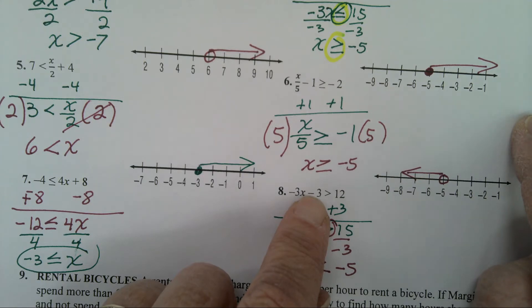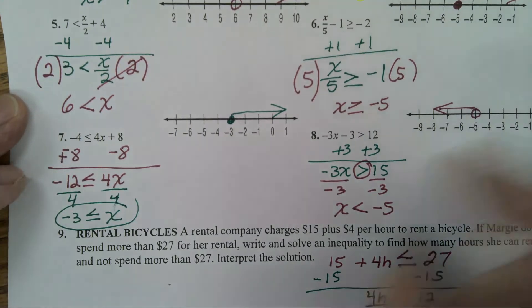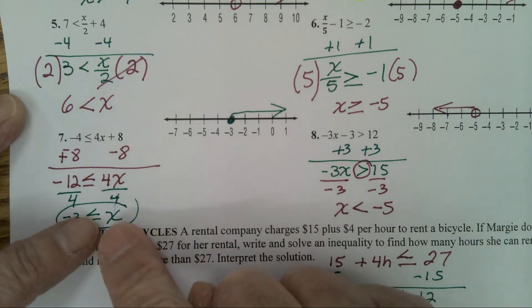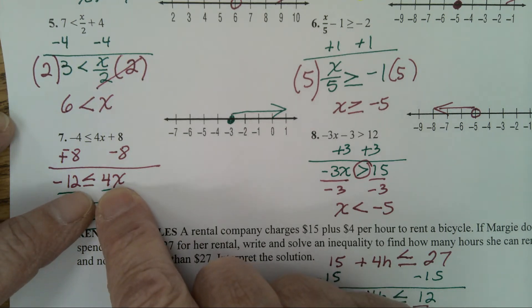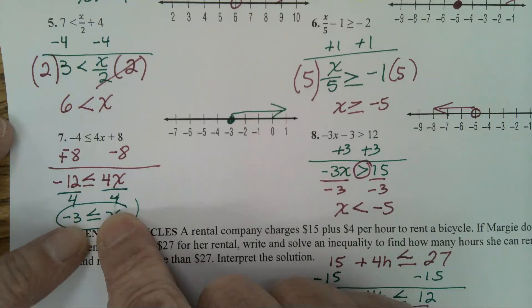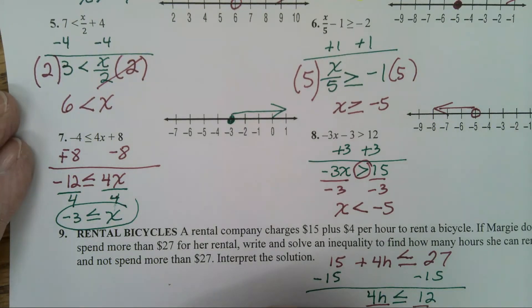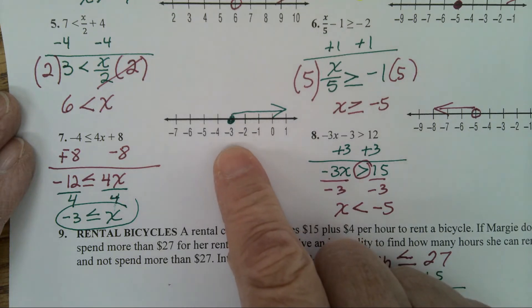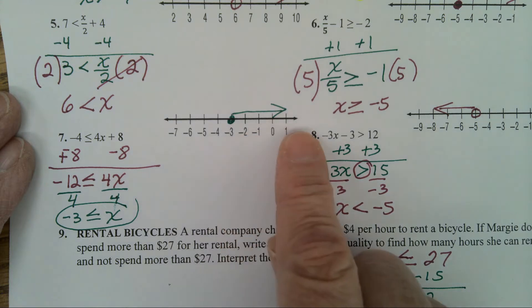On the next problem, number 7, you subtract 8. You now have negative 12 is less than or equal to 4x. Divide both sides by a positive 4. You end up with negative 3 is less than or equal to x. A closed circle on the negative 3. X has the big N — big numbers live to the right.